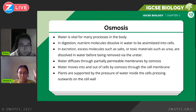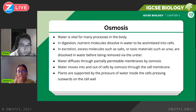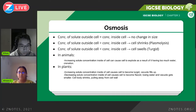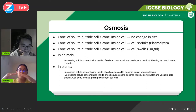Plants are supported by water pressure inside cells pressing outward against the cell wall. Plant cells have a cell wall that provides protection and extra support, so if there's excess water inside, the cell won't burst. When the concentration of solute outside is equal to the concentration inside the cell, there will be no change in cell size — this applies to both animal and plant cells.